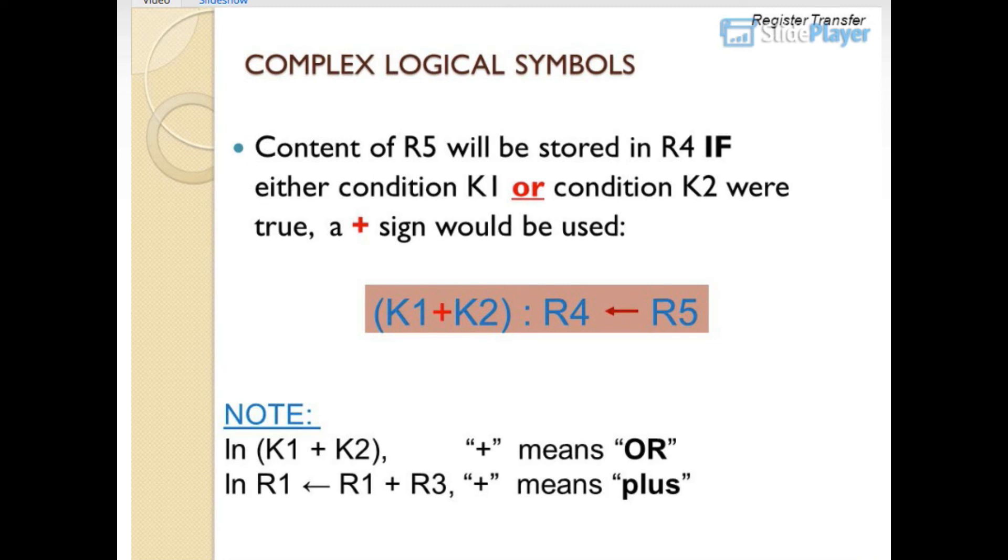Complex logical symbols: content of R5 will be stored in R4 if either condition K1 or condition K2 are true. A plus sign would be used: K1+K2: R4 gets R5. Note: in K1+K2, plus means OR. In R1 gets R1 plus R3, plus means addition.